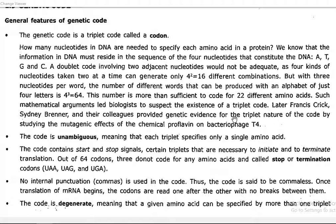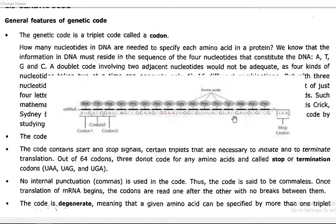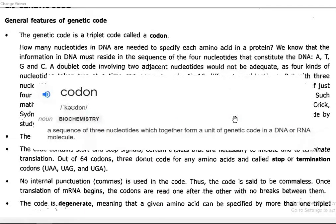The genetic code is triplet in nature and it codes for a codon. A codon is made up of a triplet — that is, 3 nucleotides present among the 4 bases: A, U, G, and C. This is a salient point.